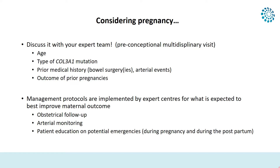Prior medical history is of particular importance. If the patient has had major bowel surgeries or important abdominal scarring, that may be a problem for pregnancy. Most importantly, the occurrence of arterial events matters — aortic dissection would be a problem for allowing pregnancy, and any aneurysmal dilatation of the iliac arteries or large arteries close to the uterus is a concern, especially if dissected. The fact that prior pregnancies have done well is also a factor in counseling for or against another pregnancy.